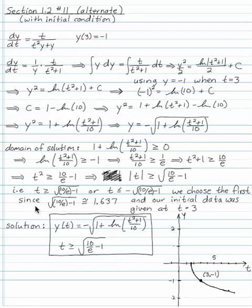There's two possible choices for t. Either t is greater than or equal to that square root of that quantity, or t is less than or equal to the opposite of the square root of that quantity. But the square root of that quantity is about 1.637. So we're going to choose t to be greater than the positive square root, because that matches our initial condition again. t has to be greater than or equal to the square root of 10 over e minus 1, because our initial condition was given at t equals 3. So now our second choice. Now we've chosen the domain.